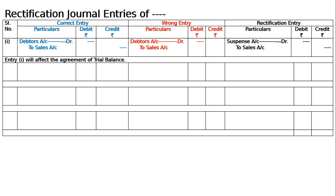Entry one will affect the agreement of the trial balance because in the sales account there will be no posting. Hence the trial balance will not tally — this will affect the trial balance. Entry two: 1000 paid for installation charges of a new machine has been debited to repairs account. The correct entry is machinery account debited to cash account, 1000/1000. This is the correct entry for payment of installation charges.